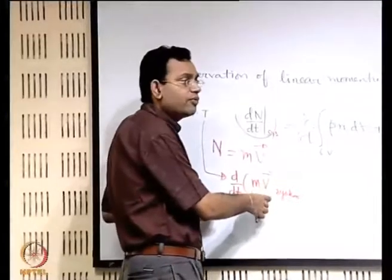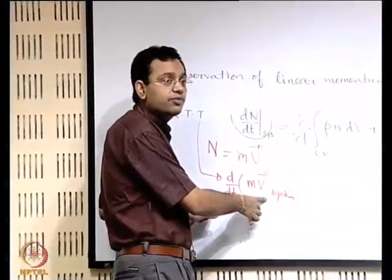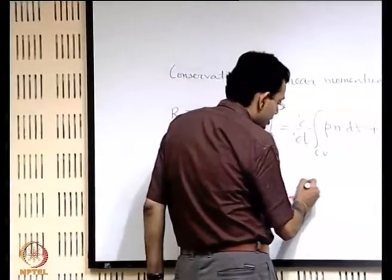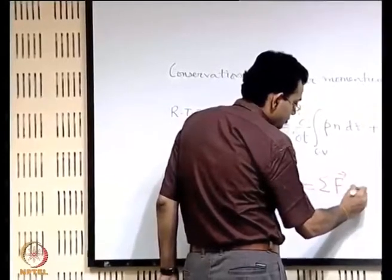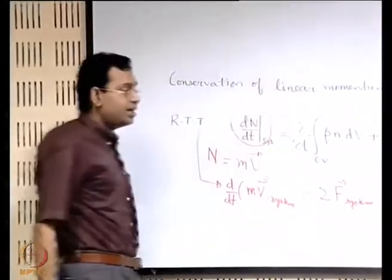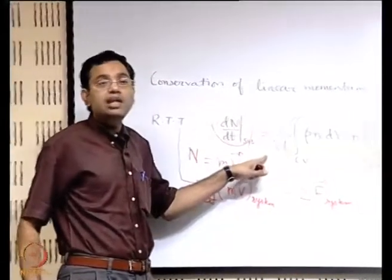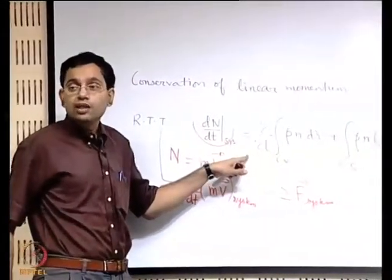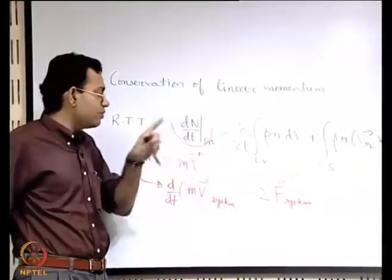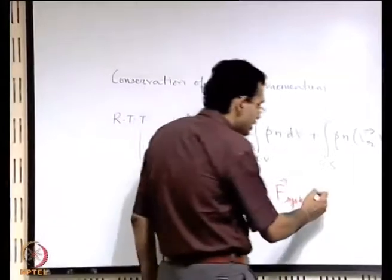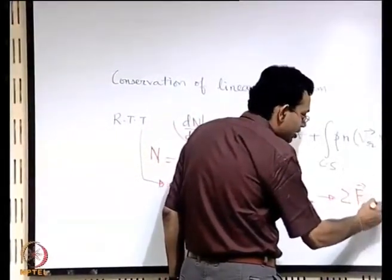When we write d/dt of mv for the system by Newton's second law of motion, this is the resultant force which is acting on the system. We have to keep in mind that we have derived this expression with a limit as delta t tends to 0. In the limit as delta t tends to 0, the system tends to the control volume. And therefore, in that limit, this also tends to the resultant force acting on the control volume.